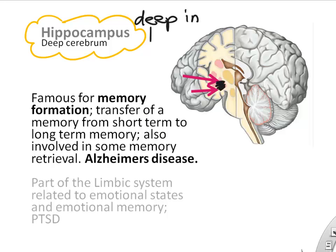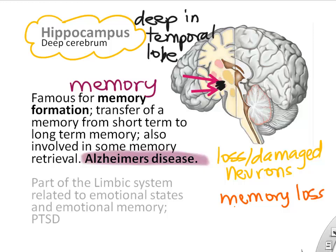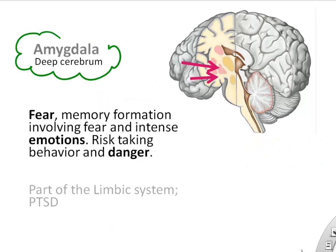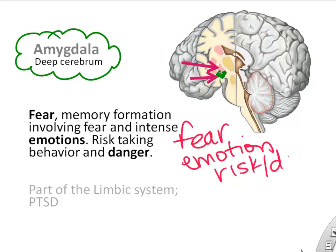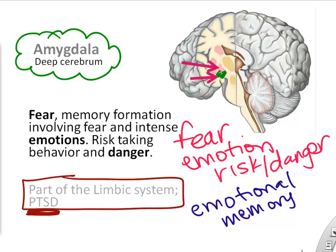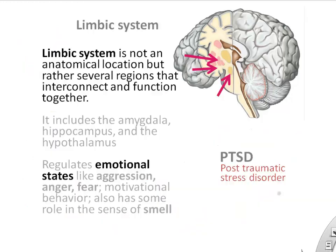The hippocampus is a deep cerebral region well known for memory. Alzheimer's disease involves loss and damage to neurons in the hippocampus, causing memory loss. It is also part of the limbic system. The amygdala is nearby and is involved in fear, emotion, and emotional memories. It is also part of the limbic system and has some role in PTSD. By genetically changing a protein in a mouse's amygdala, scientists created fearless mice that also couldn't learn to fear things — showing the amygdala's role in risk-taking and learned fear.